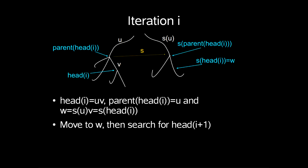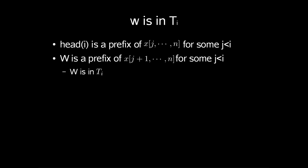At beginning of iteration i, let head(i) equal uv and parent of head(i) equal u. w equals s(u) followed by v, which equals s(head(i)). By the invariant, s of parent of head(i) and the suffix links exist. By the lemma, w is an ancestor of head(i+1). So we can move quickly to w then search for head(i+1) starting there. An observation we need to have is that w is in t(i).